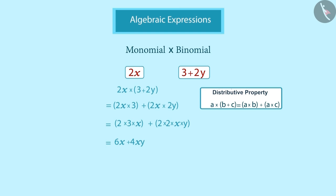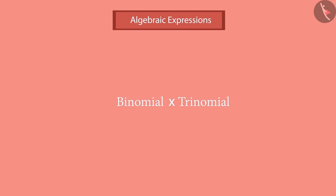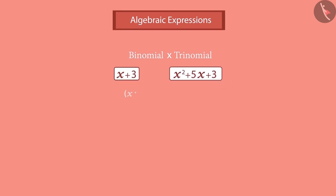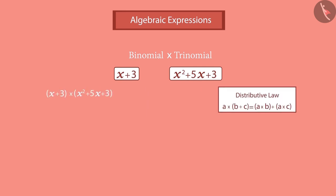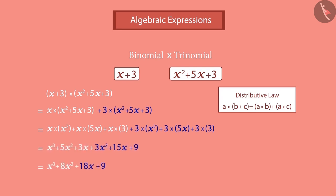Now that we know how to multiply two monomials, and a monomial and a binomial, it will be easy to understand the multiplication of a binomial and a trinomial. Suppose we have a binomial and a trinomial — let's multiply them. Using the distributive property, we expand, then apply the distributive property again to each monomial-polynomial multiplication. After simplifying in this way, we get the final result.